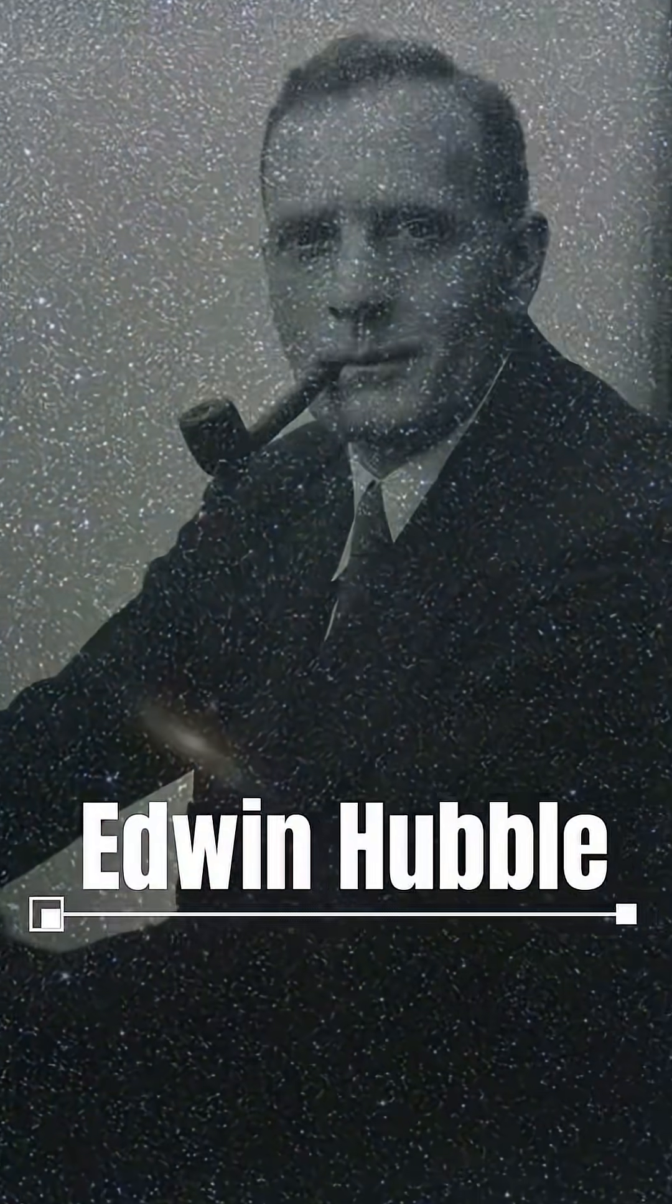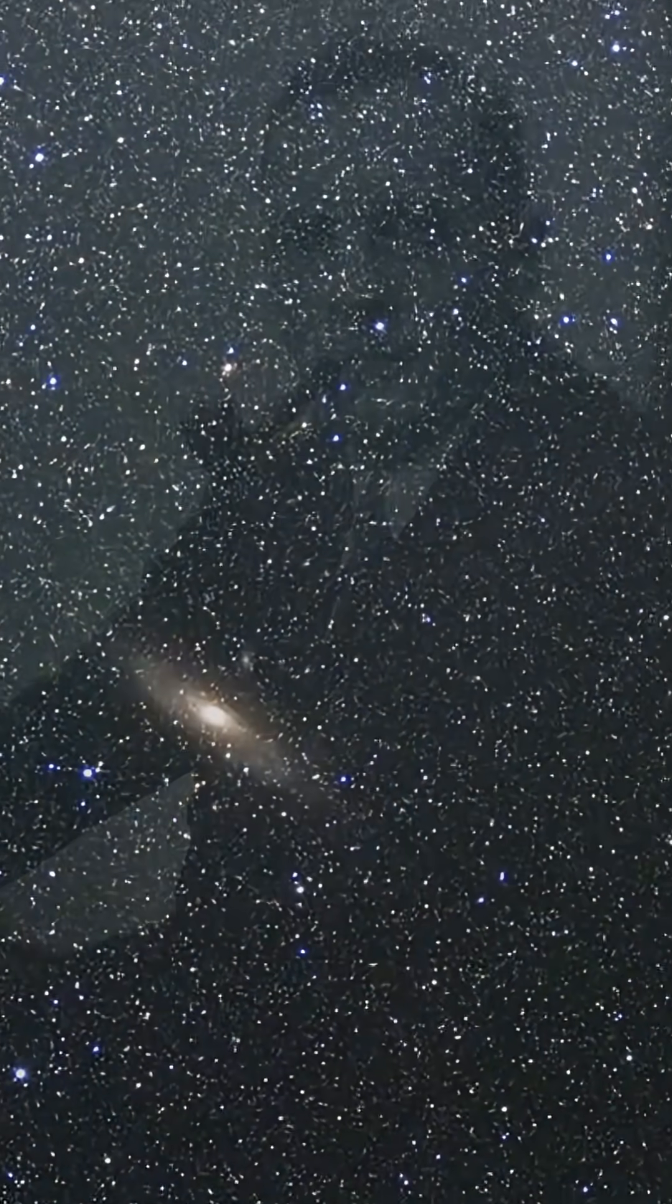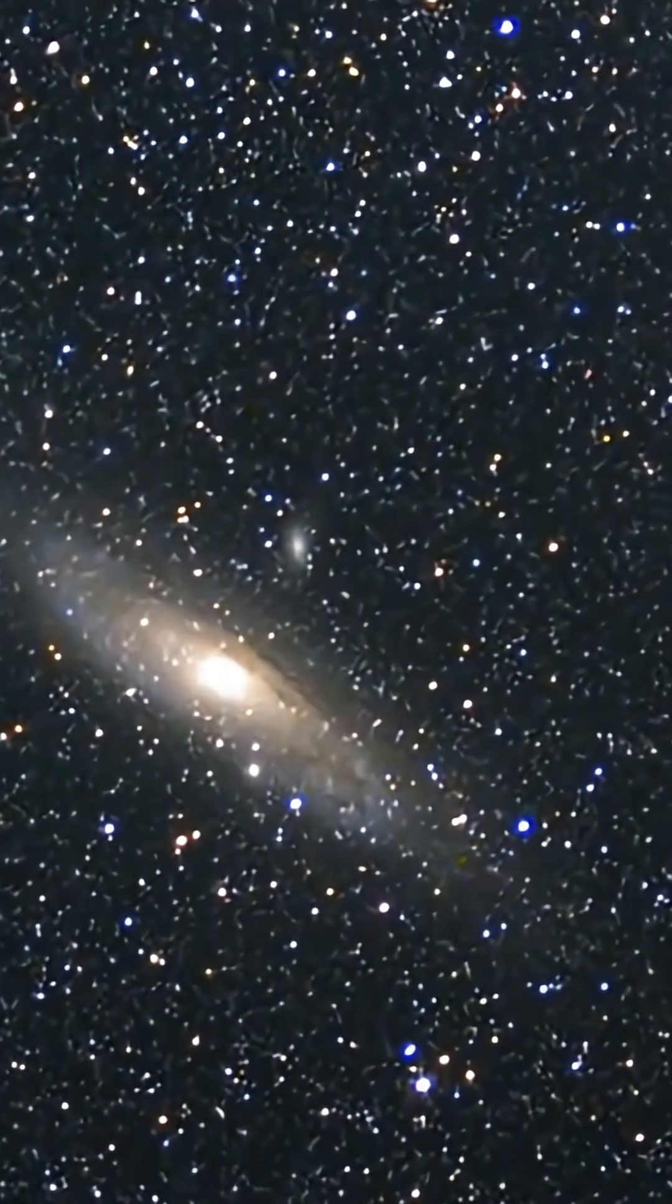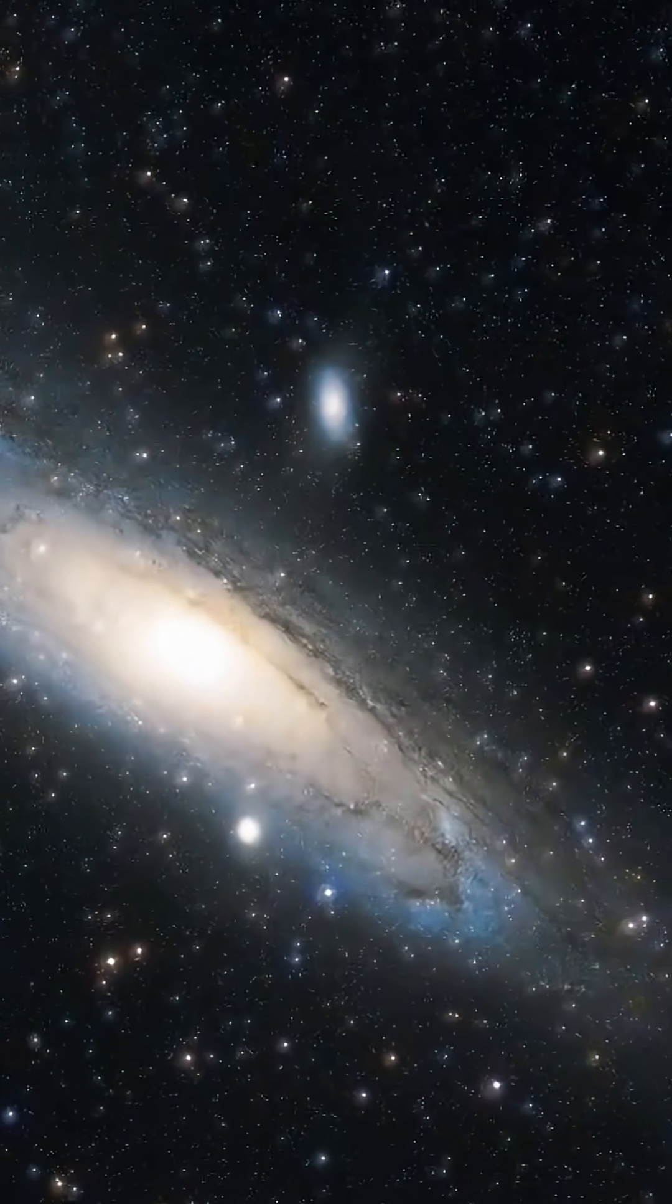In the early 1920s, astronomer Edwin Hubble focused his telescope on this cosmic riddle. Deep within its spiral arms, he discovered the key, a special kind of star, pulsing with a steady, rhythmic beat.